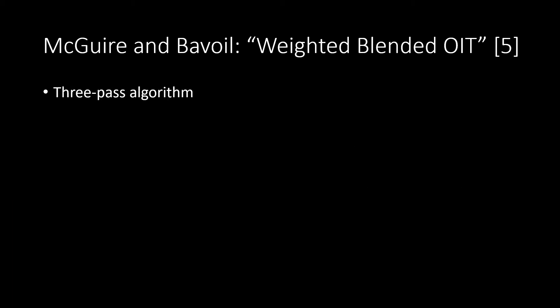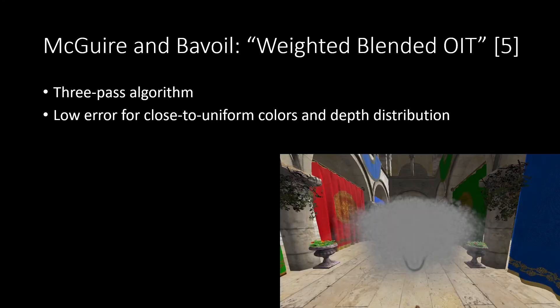The method is a simple and efficient three-pass algorithm. As long as the color distribution is close to uniform and we have a kind of even depth distribution, like in this case, we get really nice results. This is a smoke fountain which consists of lots of billboards and they are all similarly colored, and therefore we get a result which is close to ground truth and the error is not too high.